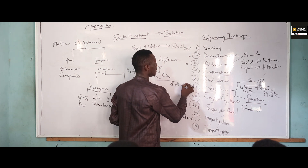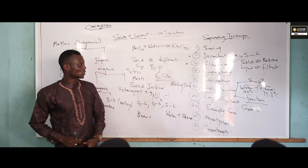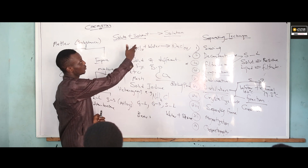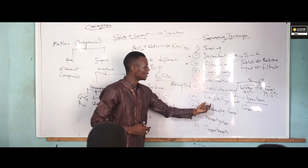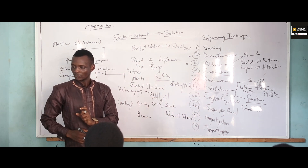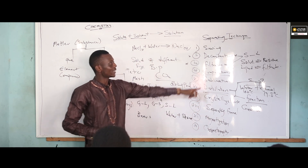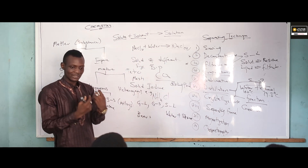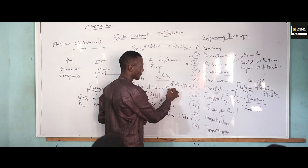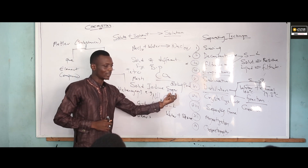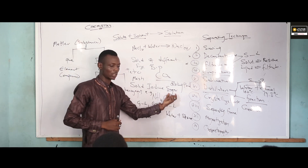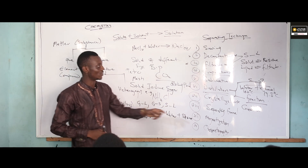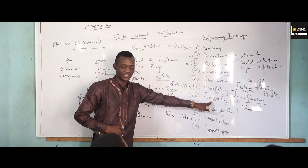The next one is crystallization. Crystallization is a separating technique which we use to separate solid from solvent. The type of solute here is one that has a low melting point — which cannot withstand heat. Unlike evaporation where the solute can withstand heat, in crystallization it cannot withstand heat. For example, sugar — when you heat sugar directly it turns brown, meaning the sugar has decomposed. So we use crystallization or recrystallization to recover it.